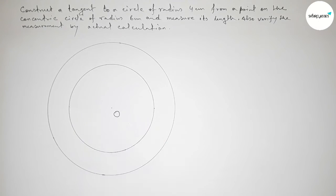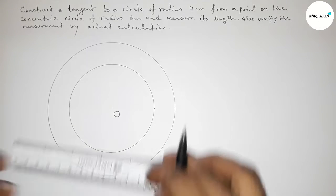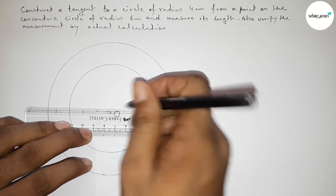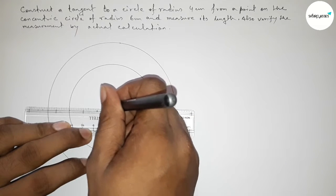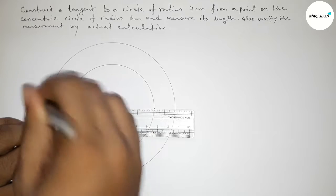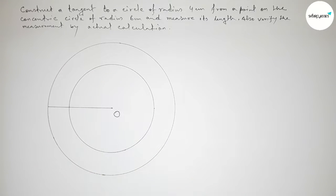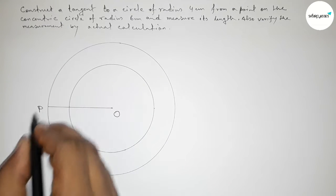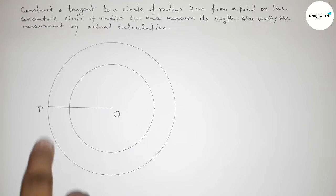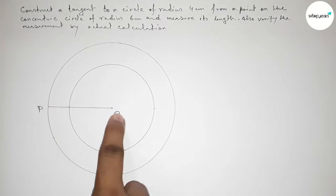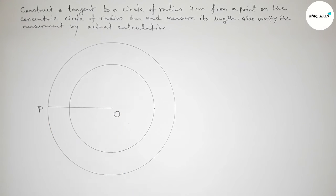Now taking center O, we join the radii — the 6 centimeter radius and the 4 centimeter radius. We mark a point P on the outer circle, so OP equals 6 centimeters. Now we have to bisect the line segment OP using the compass.